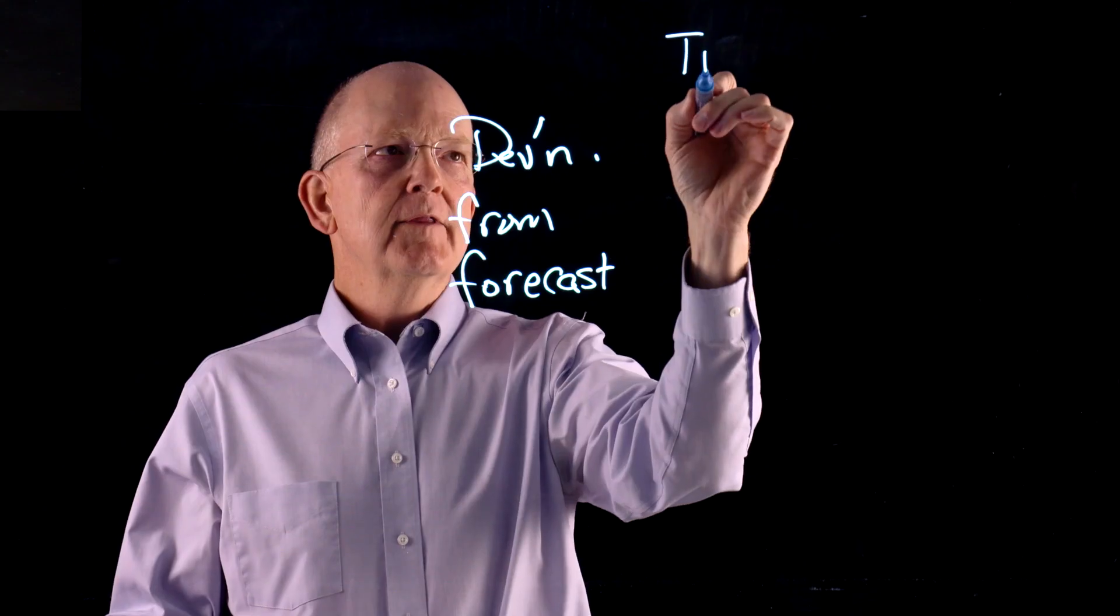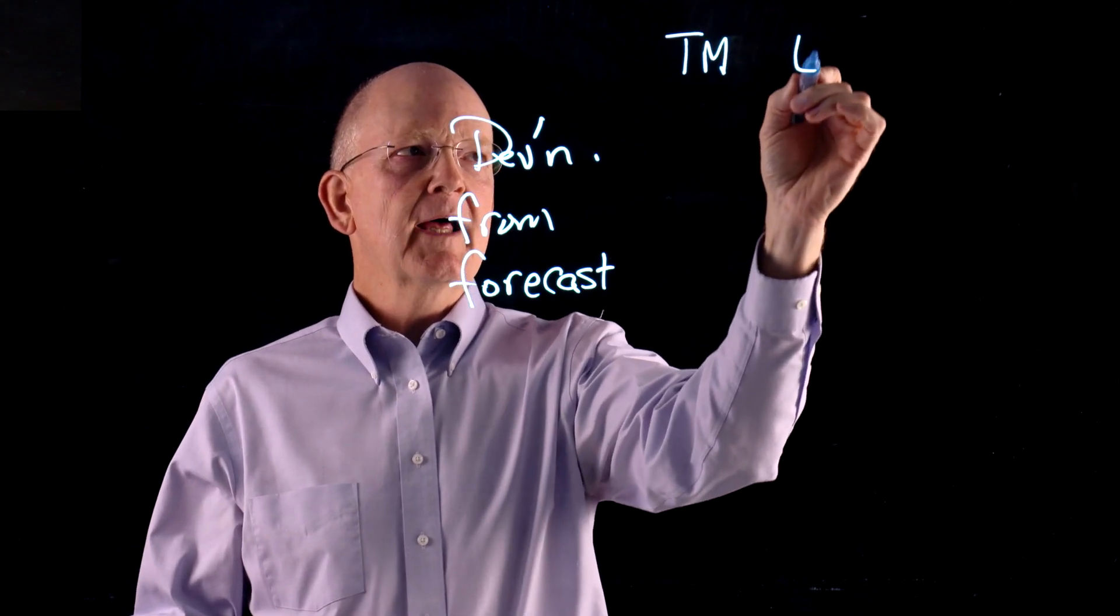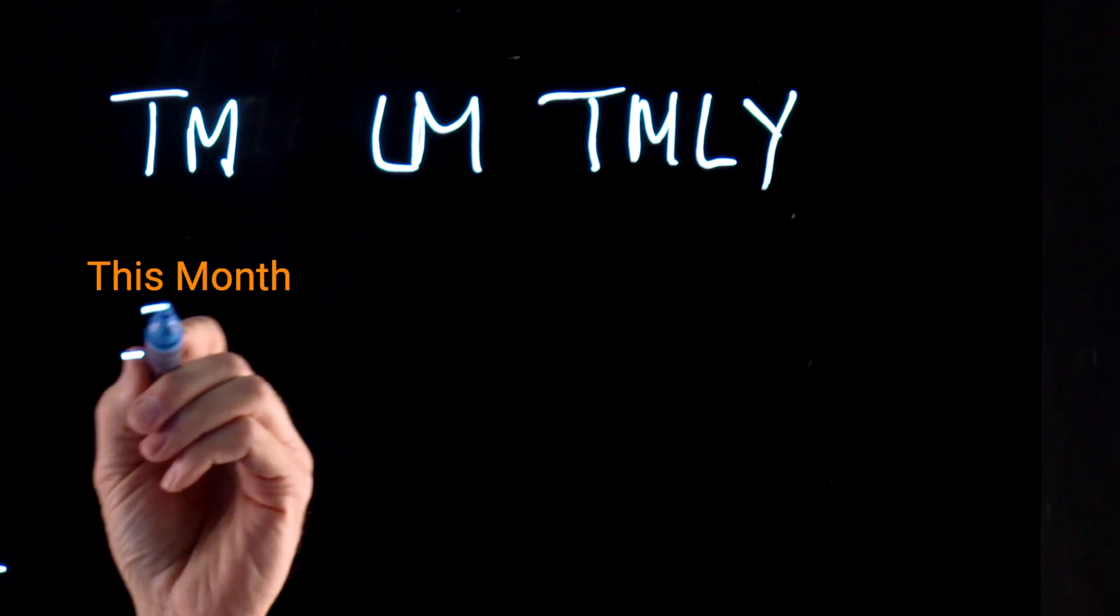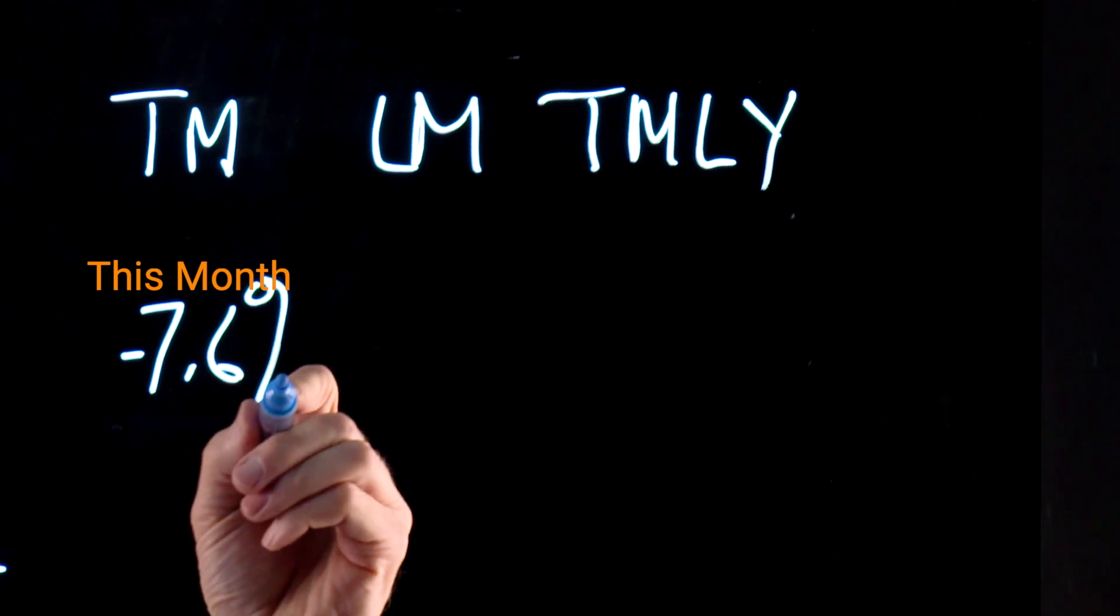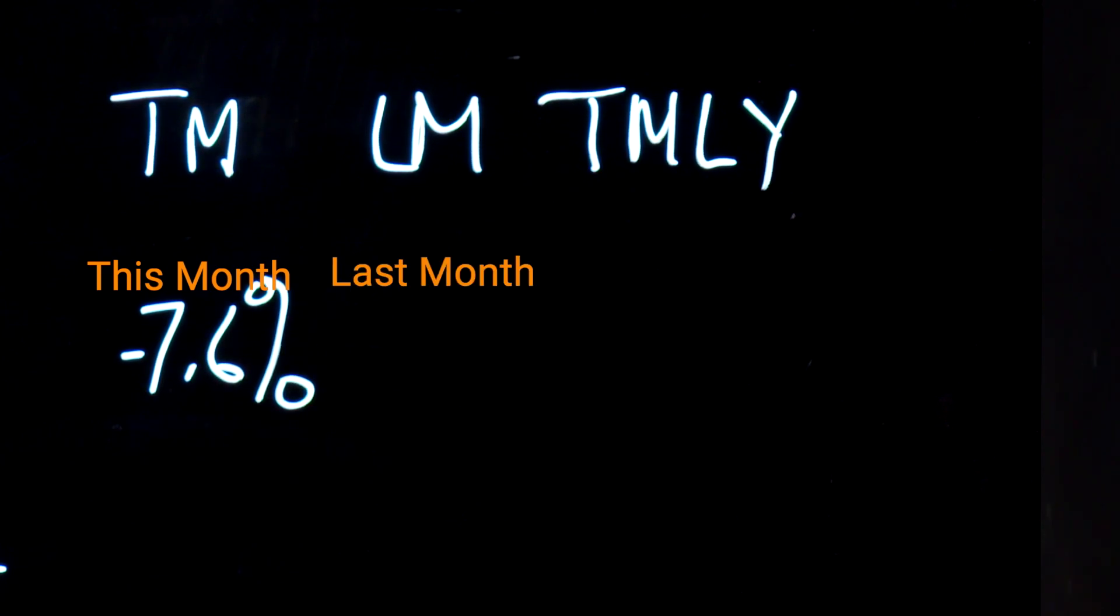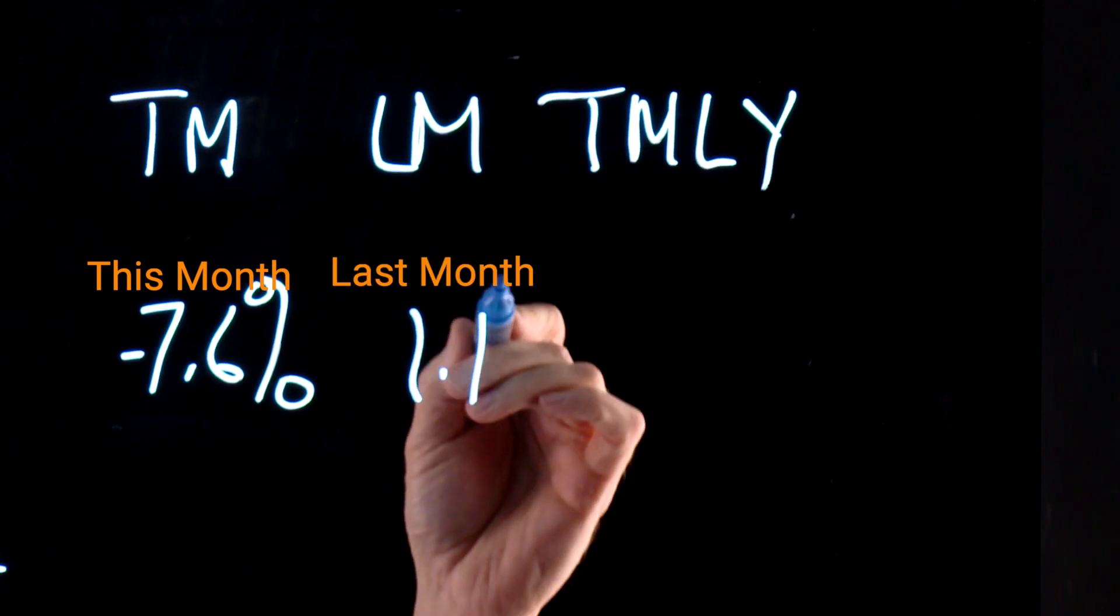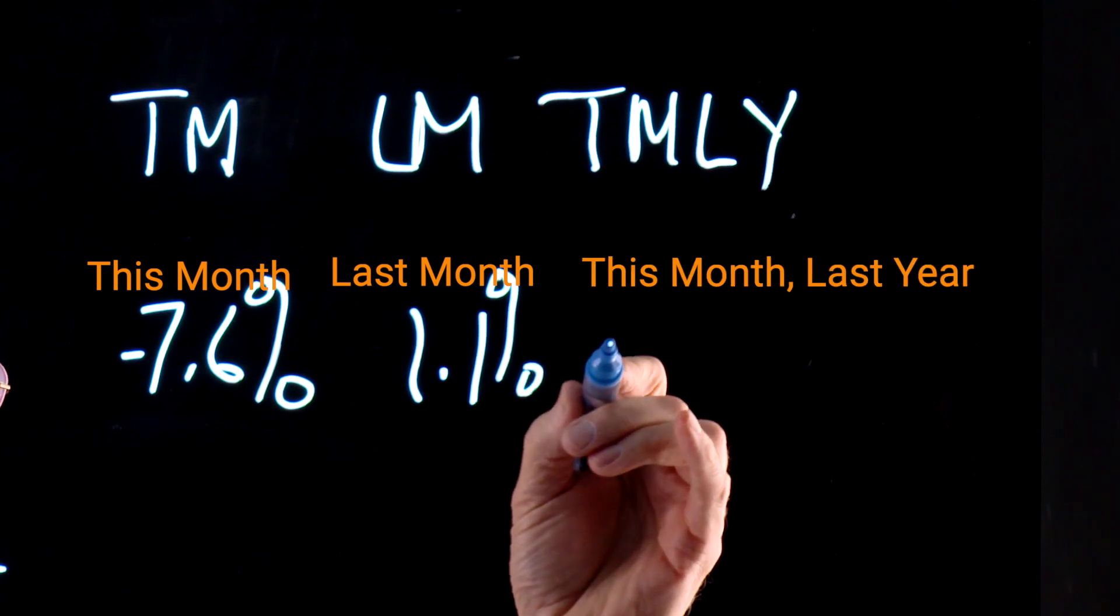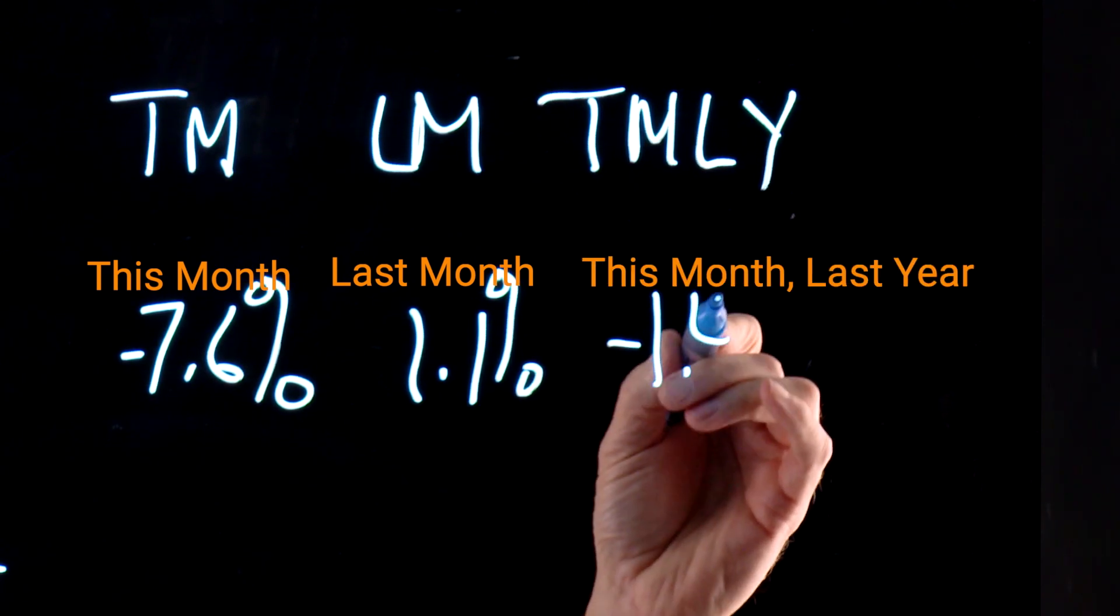We might have this month, last month, this month last year. This month we were 7.6% below forecast. Last month we were 1.1% above forecast. And last year, same month, we were minus 1.4%.